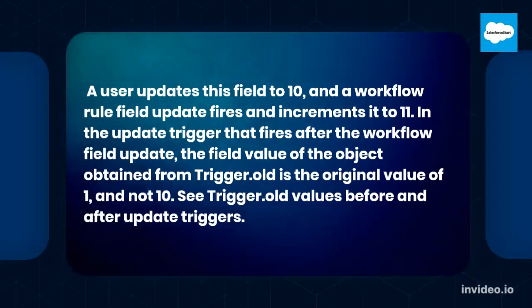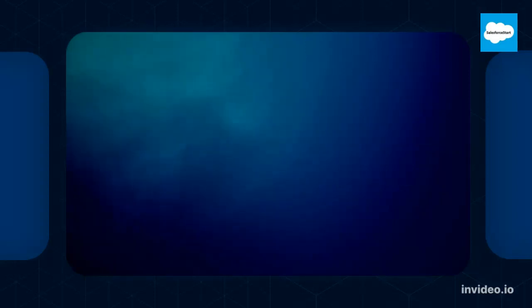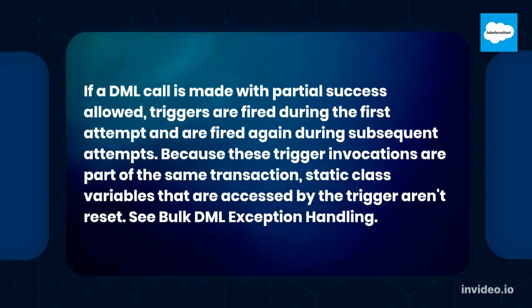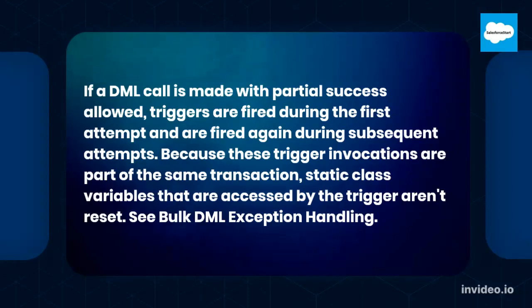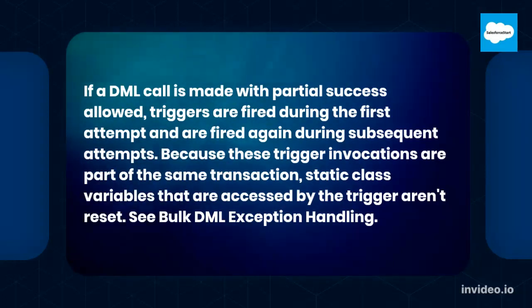See trigger.old values before and after update triggers. If a DML call is made with partial success allowed, triggers are fired during the first attempt and are fired again during subsequent attempts. Because these trigger invocations are part of the same transaction, static class variables that are accessed by the trigger aren't reset. See bulk DML exception handling.